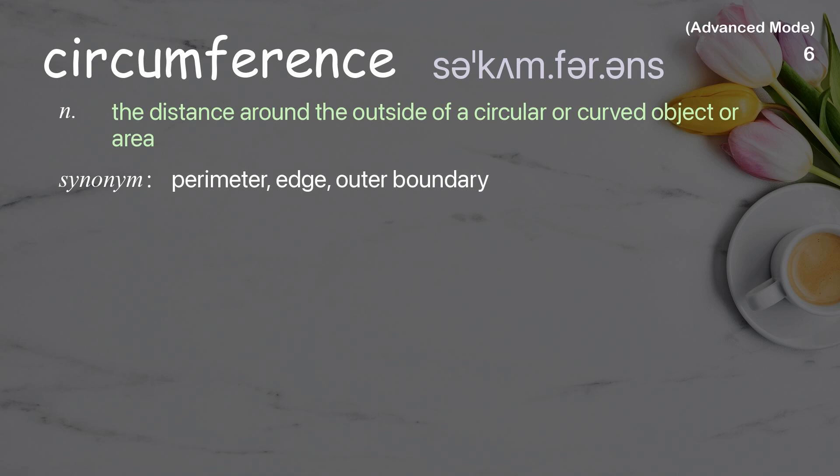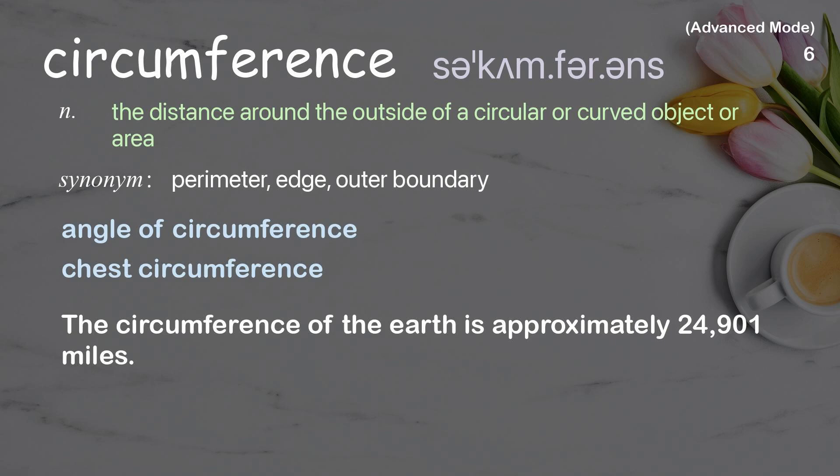Circumference: the distance around the outside of a circular or curved object or area. Examples: angle of circumference, chest circumference. The circumference of the earth is approximately 24,901 miles.